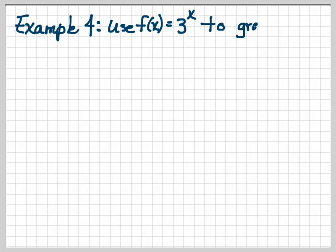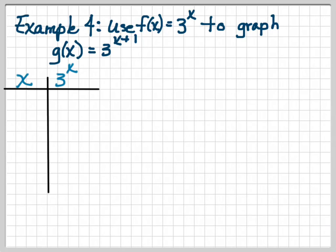Example four. We want to use 3 to the x to graph 3 to the x plus 1. So we're going to do this by plotting some points, or figuring out some points. So we're going to choose these points for x, and we're going to solve for y. So we'll have 1 ninth, 1 third, 1, 3, and 9.